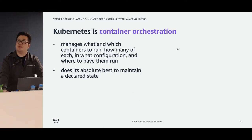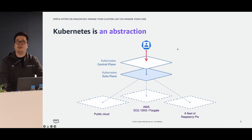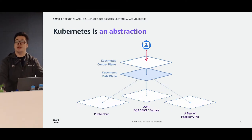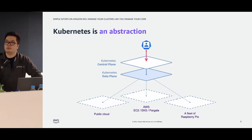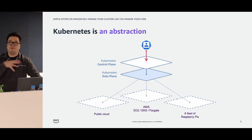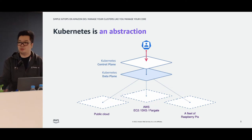Kubernetes is also a pretty big abstraction, and this is something a lot of people don't fully comprehend. One of the biggest draws for Kubernetes is that it abstracts mostly everything about your infrastructure and platform. If you're running on top of Kubernetes, you really don't have to think about whether you're on AWS, EC2, Fargate, a fleet of Raspberry Pis, or an on-premises location. The idea is that it's agnostic — you can bring Kubernetes anywhere and it functions as you'd expect.